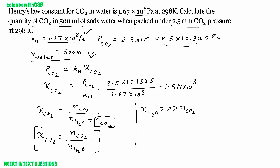We need to find the quantity (mass) of CO2. If we can find the number of moles of CO2, we can find mass using: number of moles = mass / molar mass. So our next task is finding the number of moles of CO2. We can label the simplified mole fraction equation as equation 1.